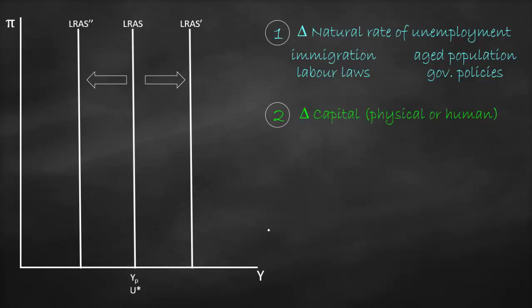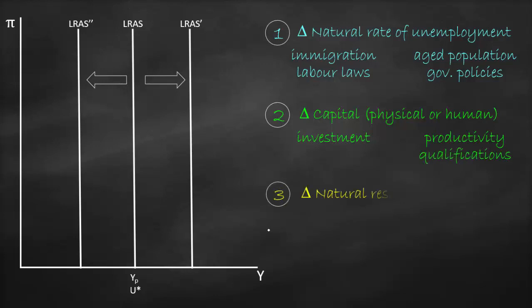The second factor is a change in capital, which could be physical capital or human capital — for example, new investment or higher productivity because people become highly skilled with higher qualifications. The third factor is a change in natural resources: either we discover new resources, such as a new gold mine, or we suffer a natural disaster such as an earthquake. The fourth factor is a change in technology — if we have better technology, the long-run aggregate supply curve will shift to the right.